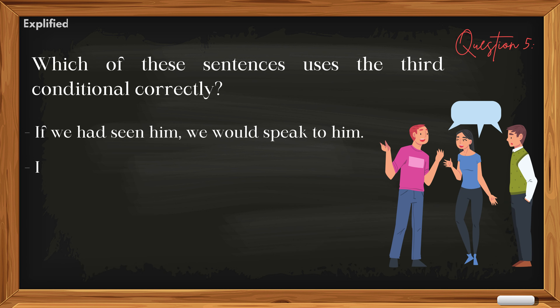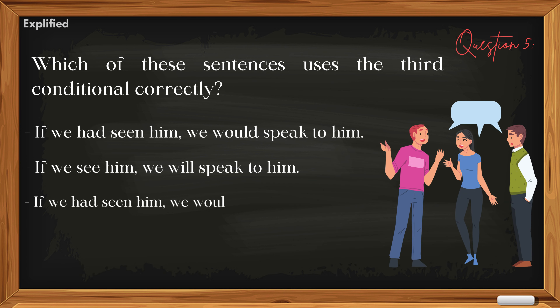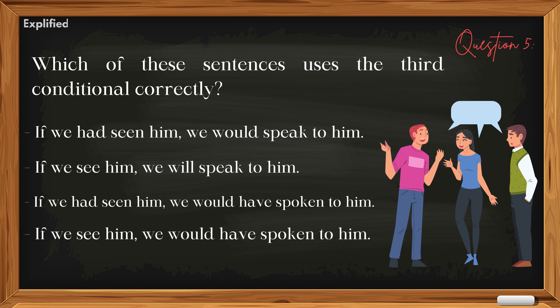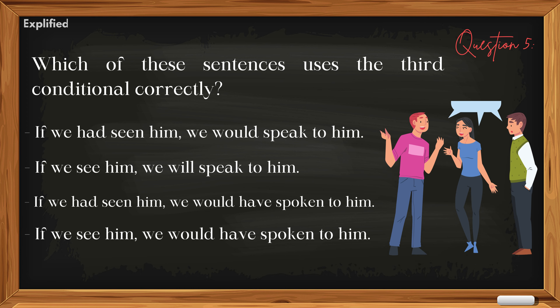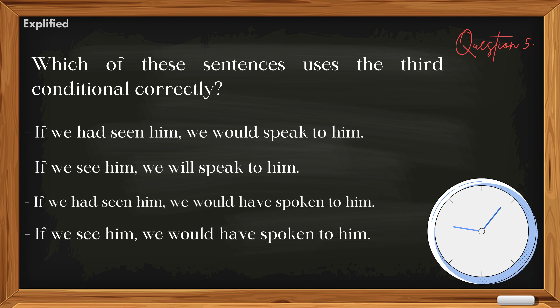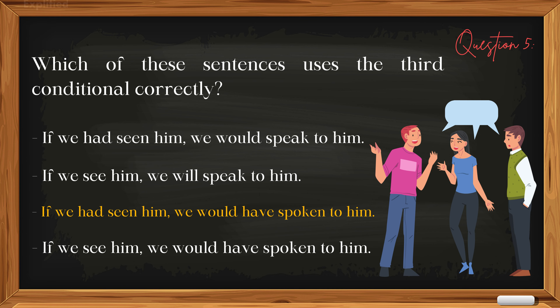Question 5: Which of these sentences uses the third conditional correctly? 'If we had seen him, we would speak to him.' 'If we see him, we will speak to him.' 'If we had seen him, we would have spoken to him.' 'If we see him, we would have spoken to him.' Answer: 'If we had seen him, we would have spoken to him.'